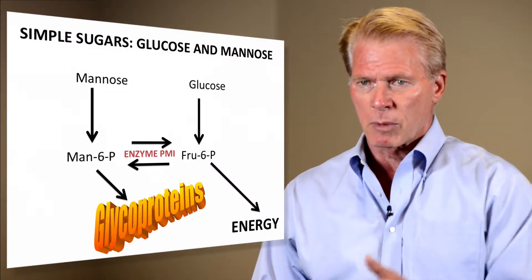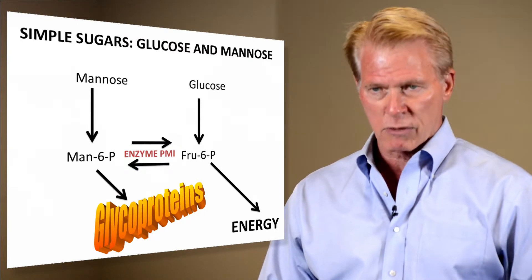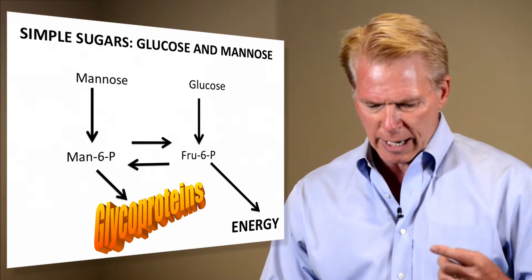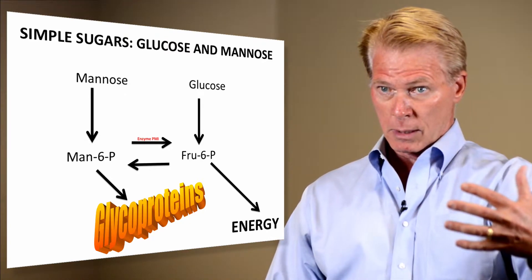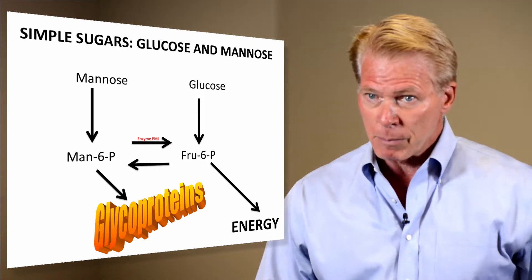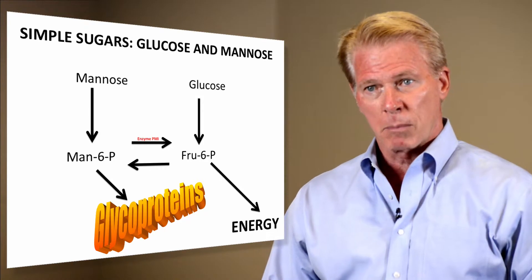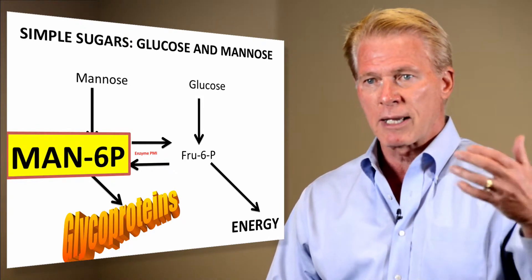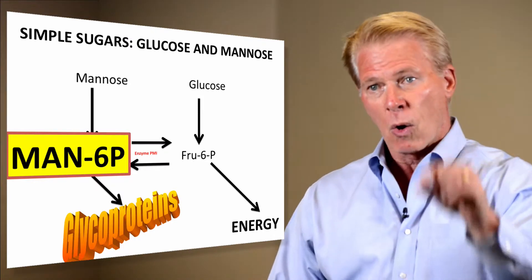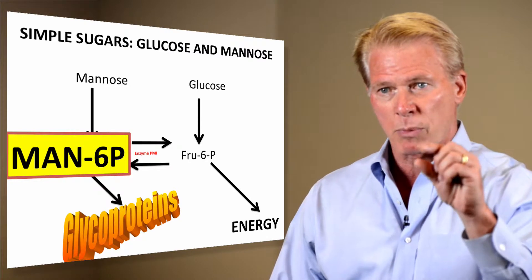What was the problem? Mannose 6-phosphate. Wait — you said mannose 6-phosphate saved this kid, and now you're telling me that mannose 6-phosphate caused all this problem? Well, glycoproteins require mannose 6-phosphate, and you can get that from glucose or mannose. But Max had only a small amount of phosphomannose isomerase, and so when he got a load of mannose, there was enough to take care of him. But in the dose given to the mice, it was too much. The result was that they increased the amount of mannose 6-phosphate in the cells — but only the cells in the eye, only those cells developing into a lens. That's where the problem came from.